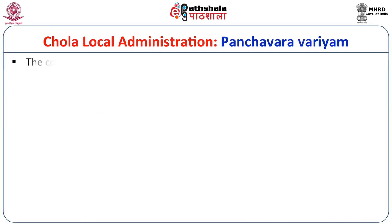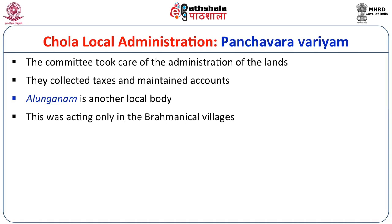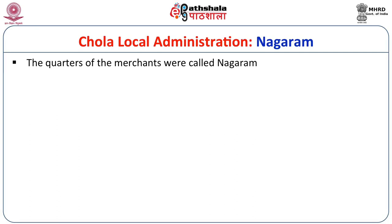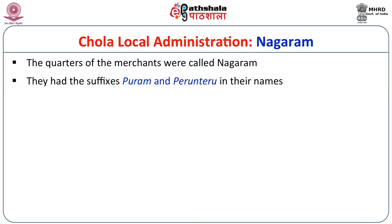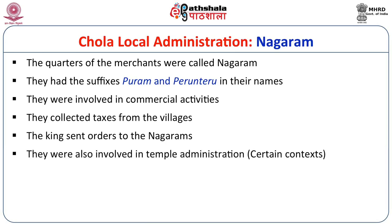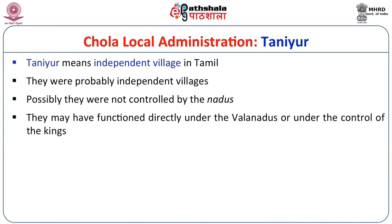We have another committee called the Panchavara Varyam, which administered lands, collected taxes, and maintained accounts. In addition, we have reference to Alanganam, another local body acting only in the Brahminical villages. Coming to the Chola's local administration, the Nagaram was a commercial center with suffixes such as Puram in their names, involved in commercial activities and collecting taxes from villages. The king sent orders to the Nagarams and they were also involved in temple administration. The Thaniyur, or independent villages, may have functioned directly under the Valanadus or the king, though we do not have much information on their exact nature.